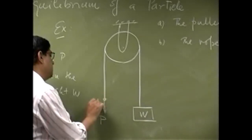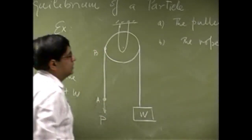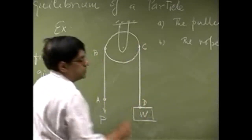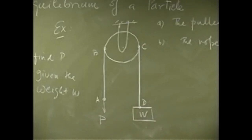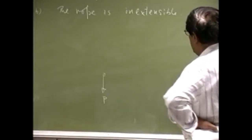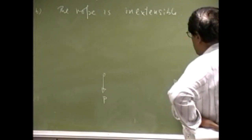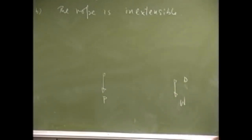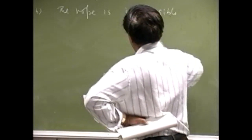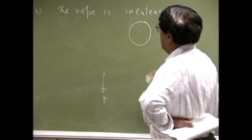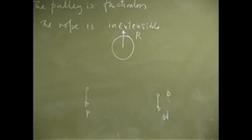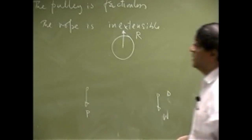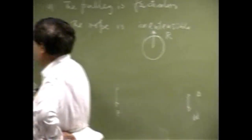We identify different points on the system: point A, the contact point B, point C, and point D. At point A there is the unknown force P. At point D there is the weight. At the pulley support there is a reaction force, which we call R. So the forces are: reaction R at the pulley support, weight at D, and unknown force P at A.